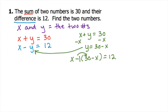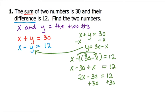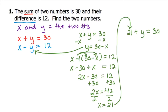Take that 30 minus x and substitute it back into the second equation where y is. Remember, we have to distribute that negative 1 — even though it's written as minus parentheses, it's the same as a negative 1 in front. So negative 1 times 30 and negative 1 times negative x gives negative 30 plus x. Drop down the x on the left, the equal sign, and 12 on the right. Combine like terms: 2x minus 30 equals 12. Add 30 to both sides, divide by 2, and you get x equals 21. Plug 21 back into the first equation and subtract 21 from both sides to get y equals 9.